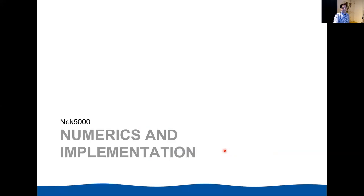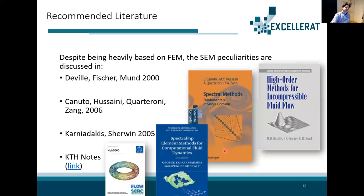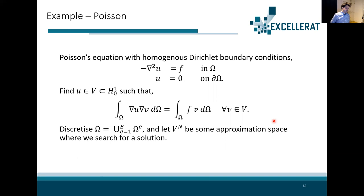Now I would like to go into the numerics of NEC 5000 and relate them to the implementation. There's a lot of literature available on how NEC 5000 and spectral element methods work. I'll focus mainly on the book by Deville et al., which really focuses on exactly the numerics also in NEC 5000, plus our tutorial put together at KTH. Starting with the Poisson equation as a standard example for demonstrating spectral element discretizations: we have nabla squared u equals some right-hand side with boundary conditions. In the weak formulation, we multiply by a test function v and do integration by parts, which gives us the bilinear form. We then need to discretize this domain in some approximation space and find the solution that approximates these integrals.